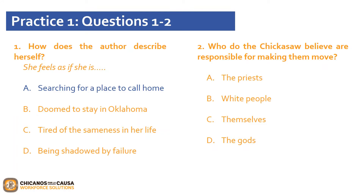Let's move on to question two. Who do the Chickasaw believe are responsible for making the move? Our options are A, the priests; B, white people; C, themselves; or D, the gods. If you selected D, that is the correct answer. This is verified in the second sentence of the second paragraph, which states: 'It was ordained by the deities.' Deities is a synonym for god, and therefore we can deduce that the correct answer is D, the gods.